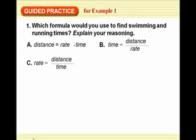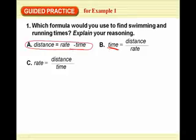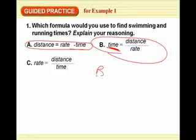Number 1 for the guided practice, which formula would you use to find the swimming and running times? Well, since we're missing time, I would probably just use this one. But since time is the one that's missing and they give it to us, I would use B. Because time is the thing we're trying to find out and solve for. And that's what they're going to say. But you could still use the other one and come up with the answer.